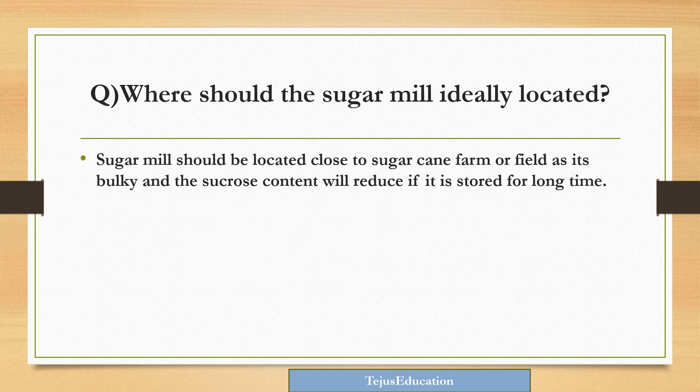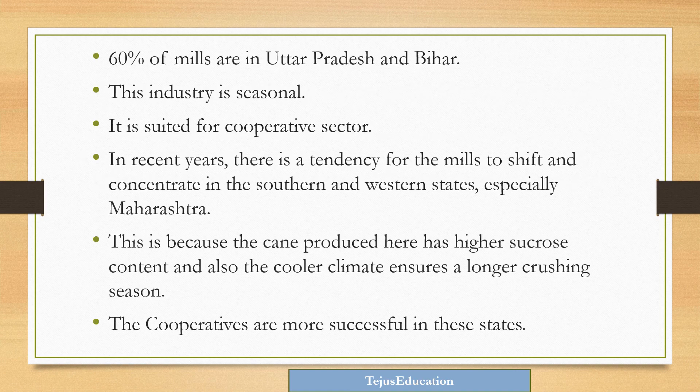Where should a sugar mill ideally be located? A sugar mill should be located close to a sugarcane farm or field, as sugarcane is bulky and its sucrose content will reduce if stored for a long time. 60% of mills are located in Uttar Pradesh and Bihar.